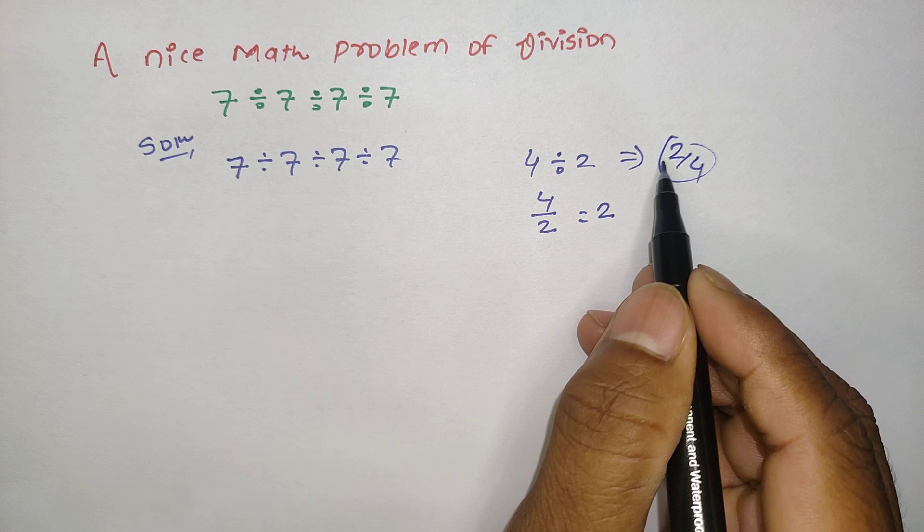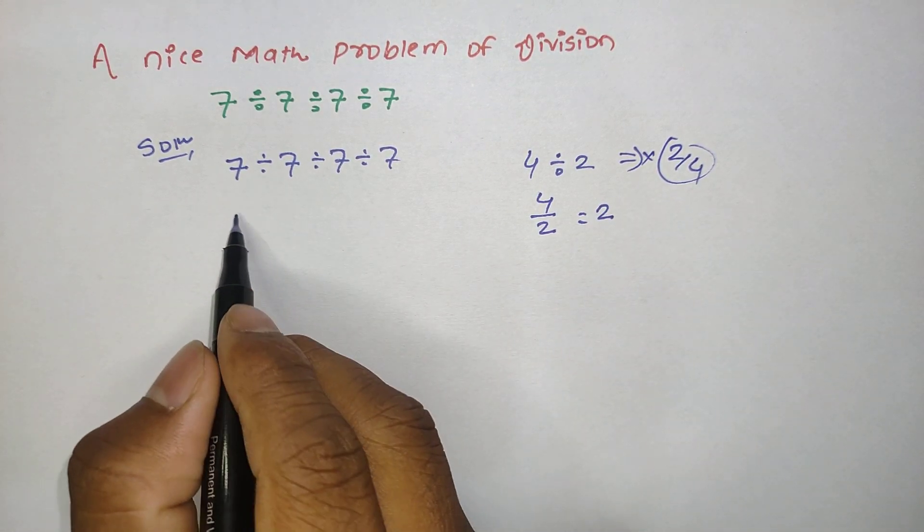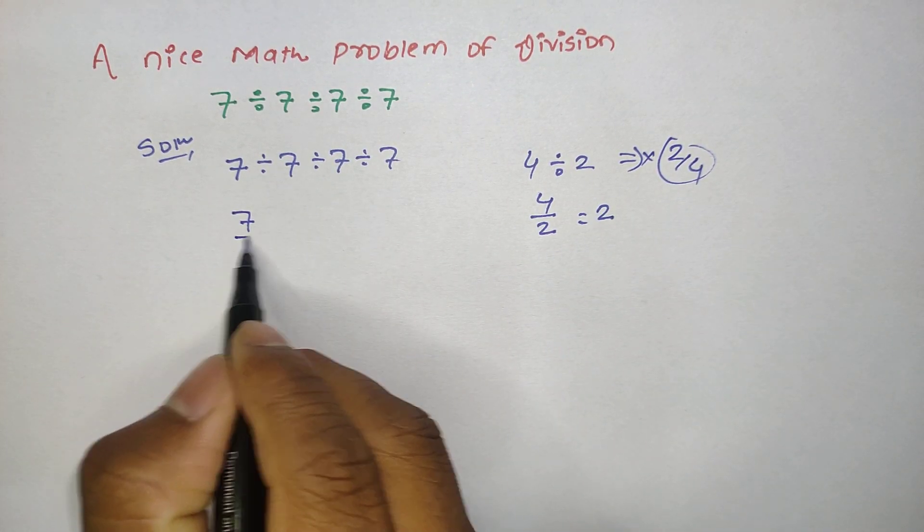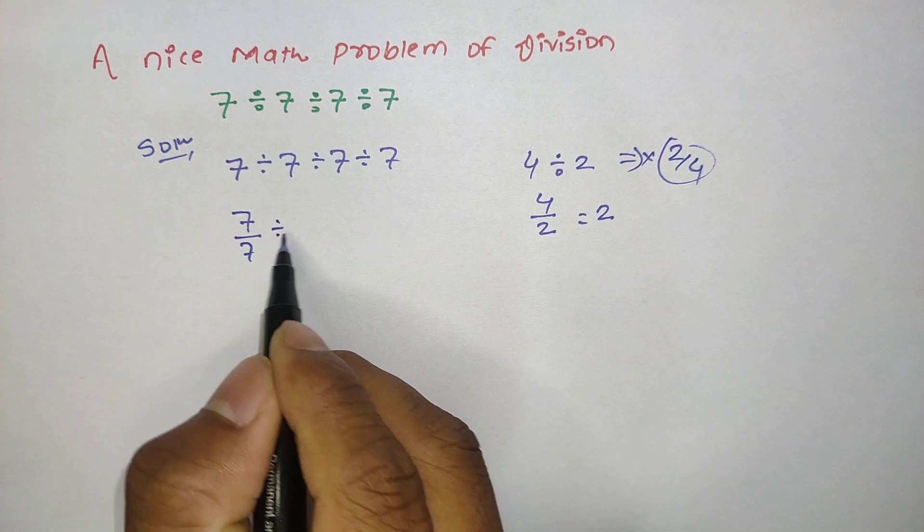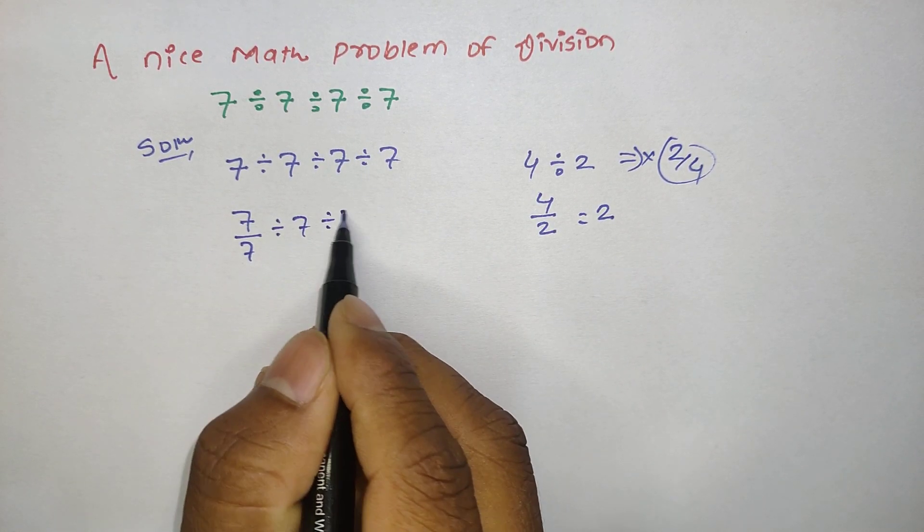Here we cannot write this one as 2 divided by 4, right? So it is completely different. So here we can divide 7 and then divide by this 7, then it is divided by 7, then it is divided by 7.